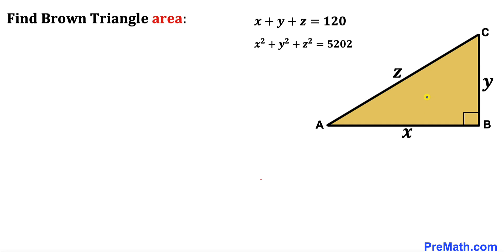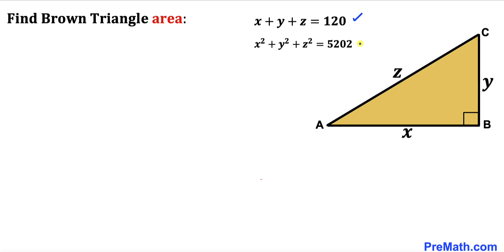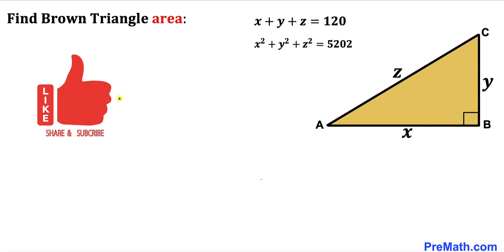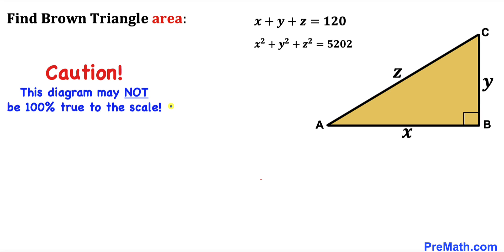Welcome to pre-math. In this video we have got a right triangle ABC, as you can see in this diagram, such that side AB is represented by X, side BC is represented by Y, and hypotenuse AC is represented by Z. Moreover, X plus Y plus Z equals 120, and X squared plus Y squared plus Z squared equals 5202. Our task is to calculate the area of triangle ABC. Please keep in mind that this figure may not be 100% true to scale.